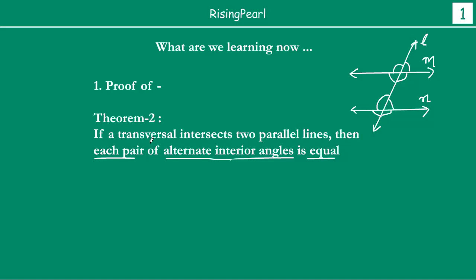Today we have to prove a theorem stating that if a transversal intersects parallel lines, then each pair of alternate interior angles is equal. The angles between the two lines are called interior angles. Alternate means one on the left side of the transversal and one on the right side. We have two pairs of alternate interior angles, and each pair is equal.